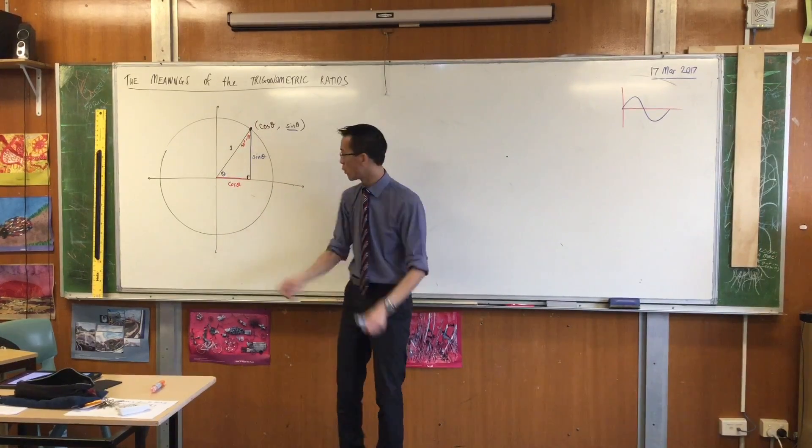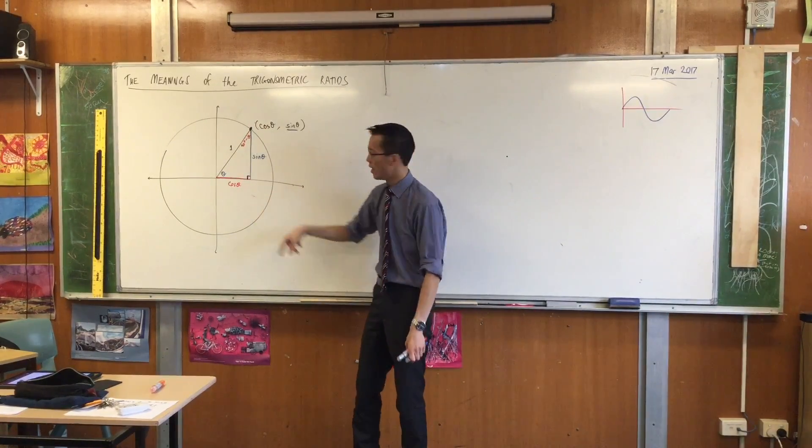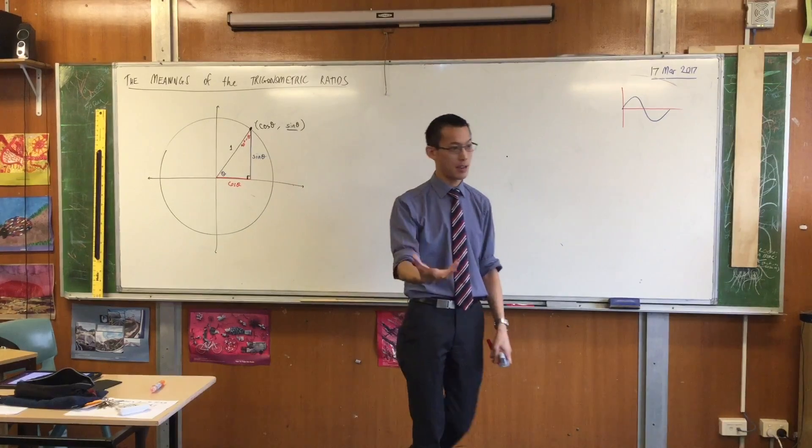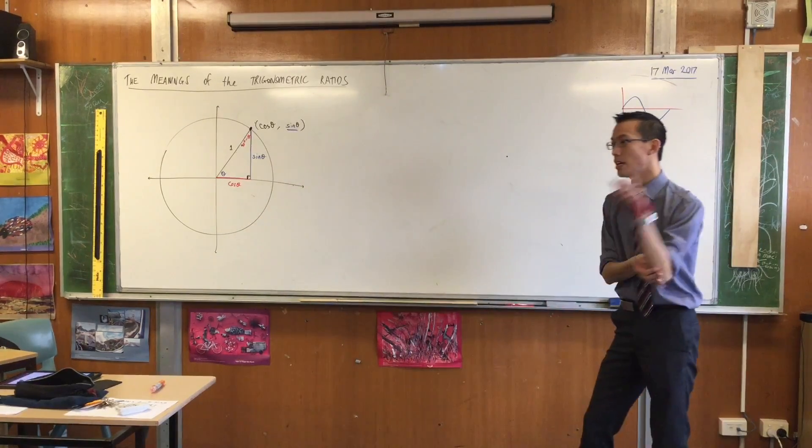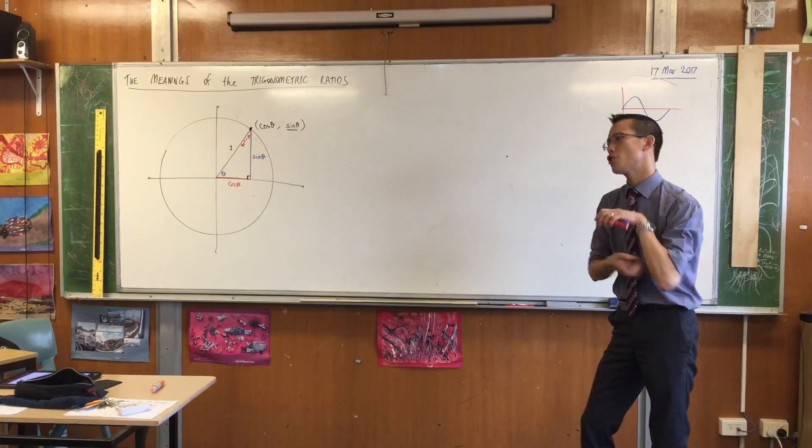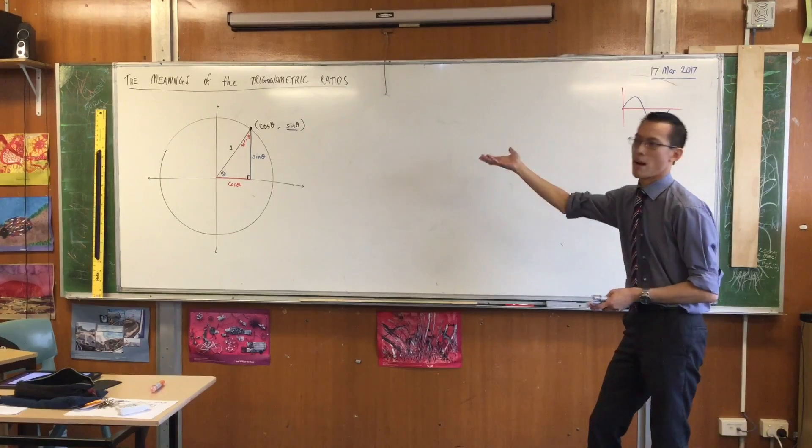We wrote a definition for this: cos of 90 minus theta is sine theta. Is that the sine rule? It's related, but you don't need the sine rule in a right-angle triangle. We start to use that when you've got non-right-angle triangles.